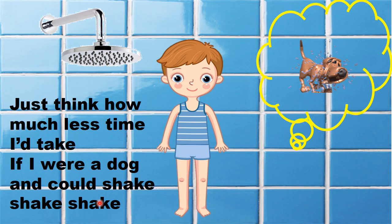Children, here this child is thinking — if he were a dog, he could take less time to make himself dry just by shaking himself. So let's recite the whole poem again.